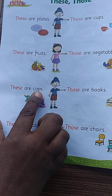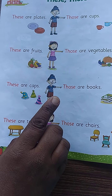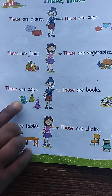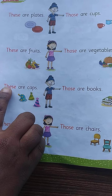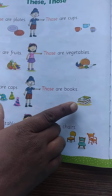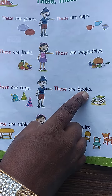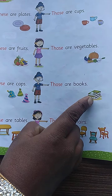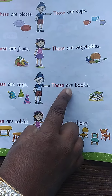These are caps. How many caps are there? One, two, three — more than one. When one cap is there, we use 'this is a cap', but here more than one, so we use these are caps. Books are far from the boy — those are books. If one book is there, we use that. If so many books are there, we use those. Those are books.